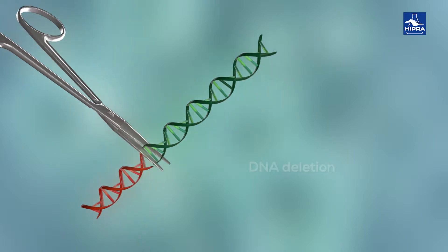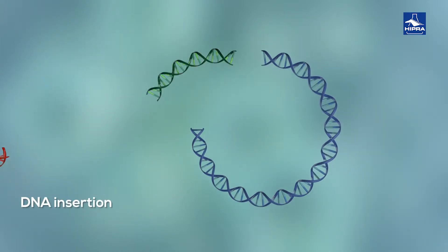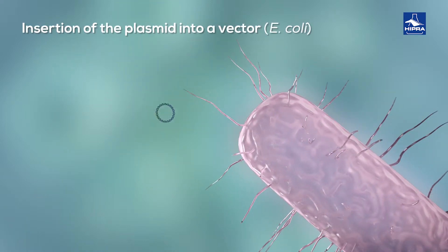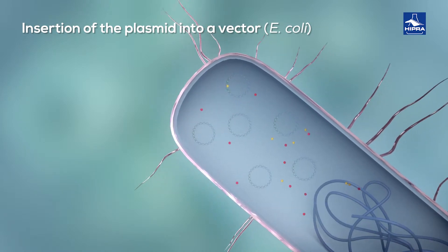This recombinant DNA fragment is inserted into a plasmid, and this plasmid is then inserted into E. coli, where the expression of large quantities of the toxin will be induced.